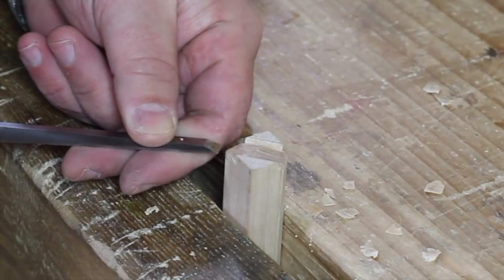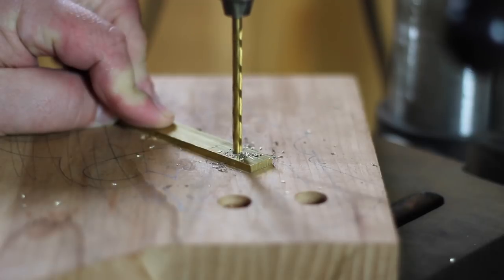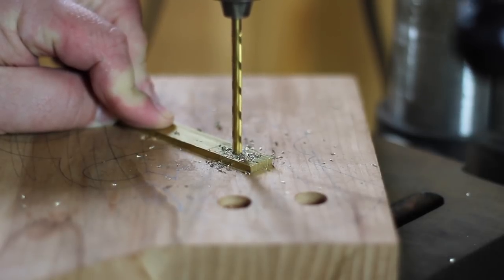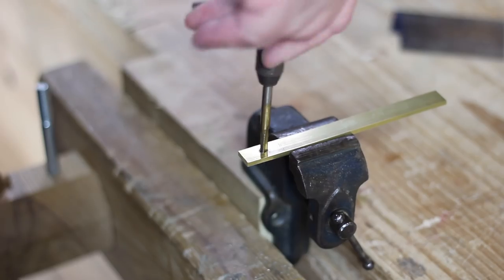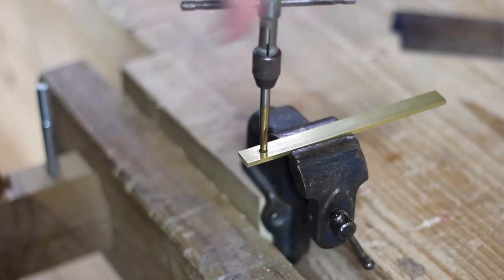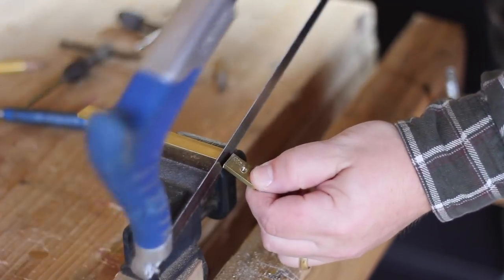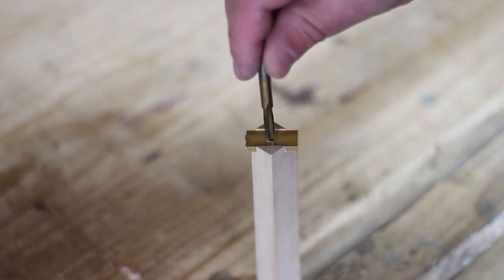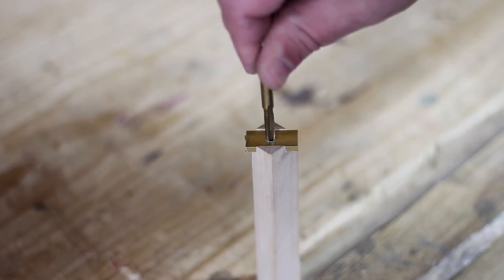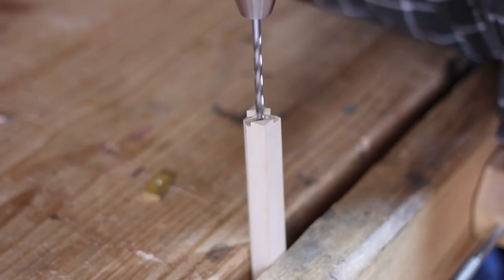Drill a pilot hole in the brass strip and then tap it for a machine screw. Saw the brass slightly oversized, then place it back into the notch on the end of the beam and mark the location of the hole. Remove the brass and drill a clearance hole in the beam for the machine screw and then epoxy the brass in place.